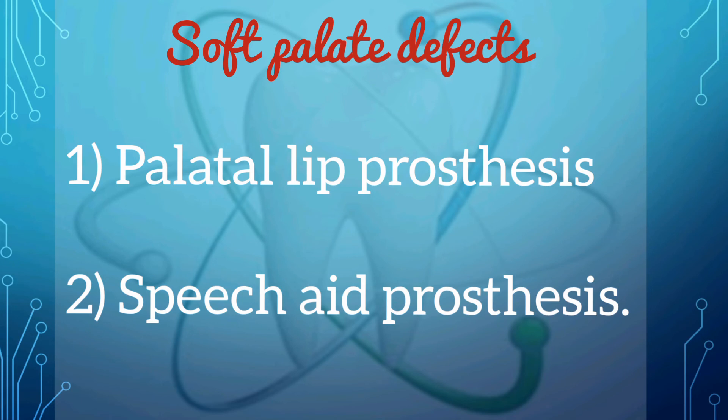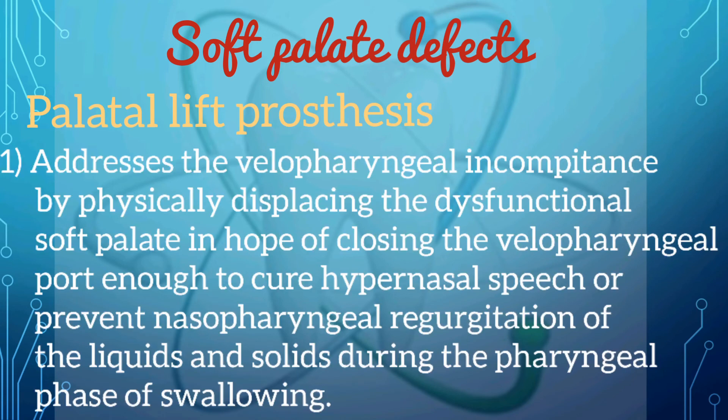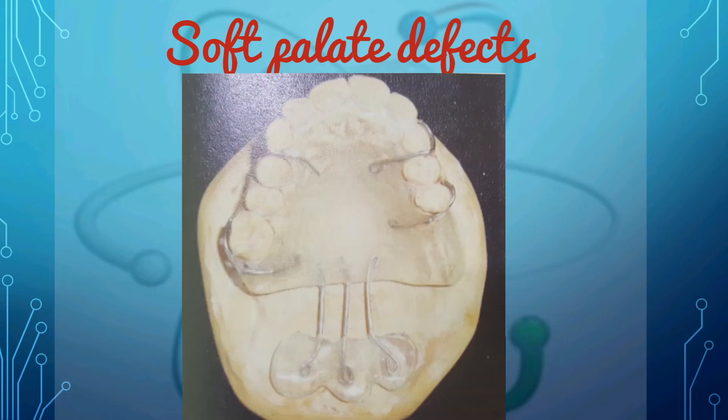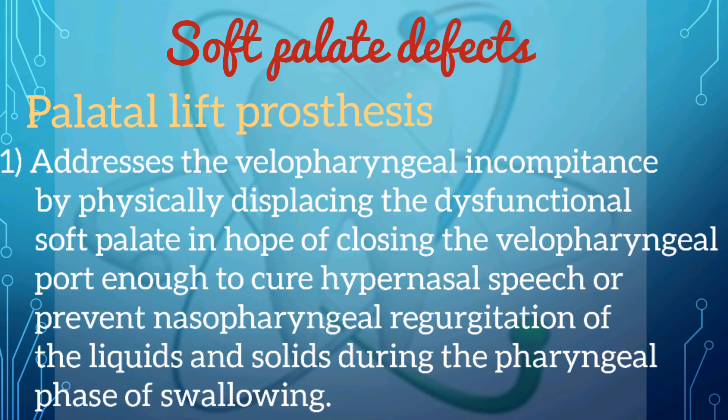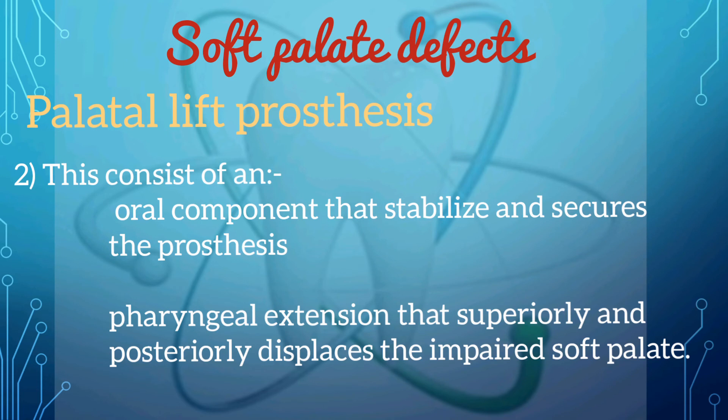Next we go through the prostheses used for the treatment of soft palate defects, which include the palatal lift prosthesis and the speech aid prosthesis. The palatal lift prosthesis addresses velopharyngeal incompetence by physically displacing the dysfunctional soft palate to close the velopharyngeal port enough to treat hypernasal speech or prevent nasopharyngeal regurgitation of fluids or solids during the pharyngeal phase of swallowing.